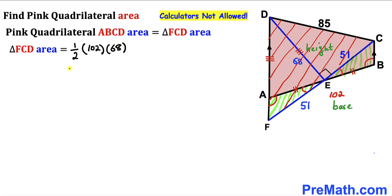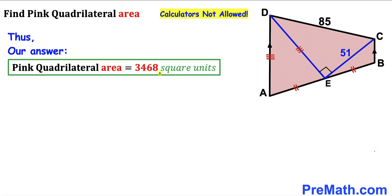And if we simplify the right-hand side that is going to give us 3,468 square units. So thus after all the calculations and manipulations, the area of this pink quadrilateral ABCD turns out to be 3,468 square units. And that's our final answer. Thanks for watching and please don't forget to subscribe to my channel for more exciting videos.